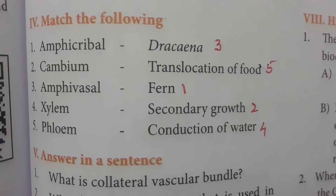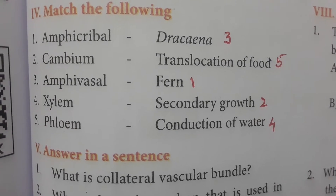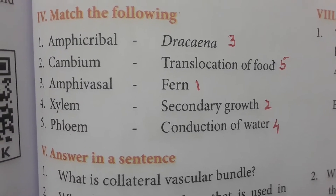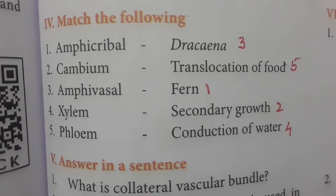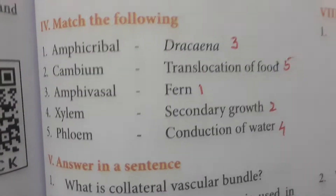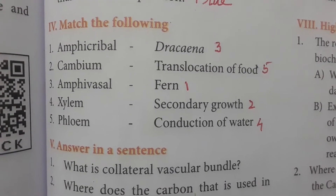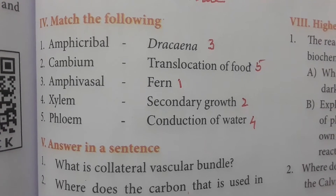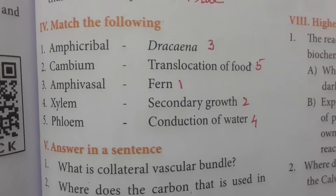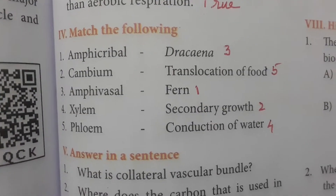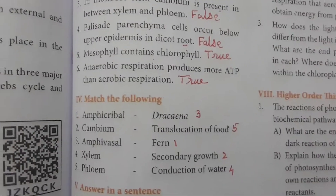Match the following. Amphicribal is found in fern. Cambium relates to secondary growth — you can find the age of plants using cambium. Amphicribal is found in dracaena xylem. Xylem involves the conduction of water, and phloem involves the translocation of food. That's all about the match the following.